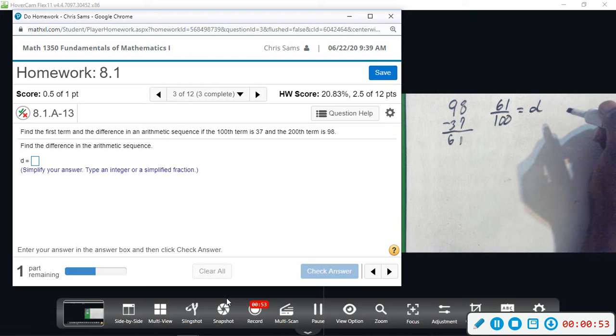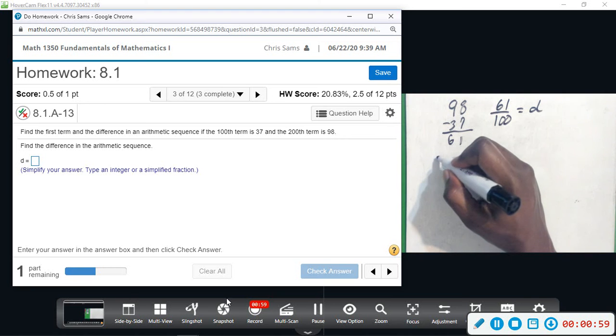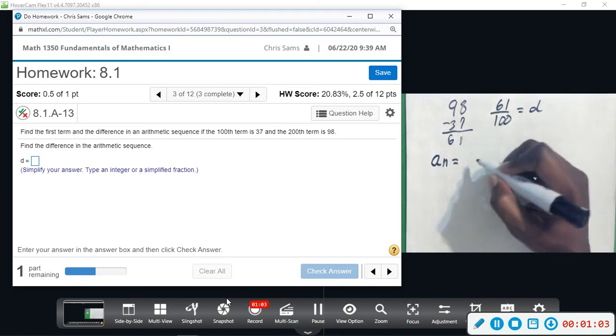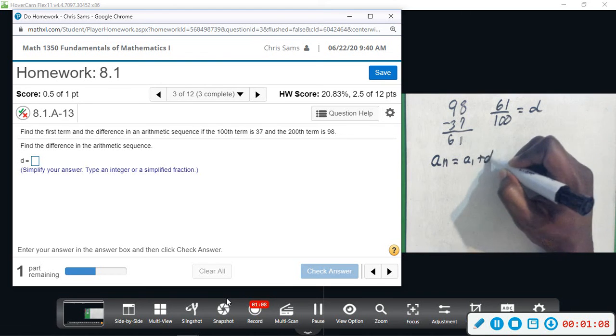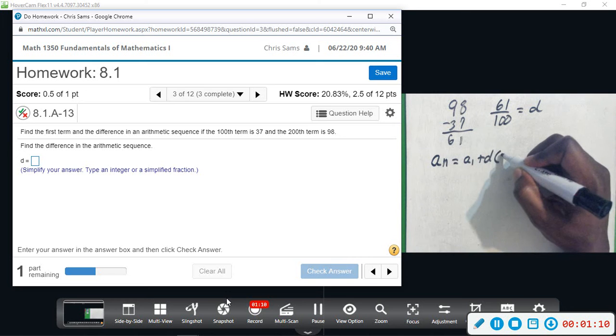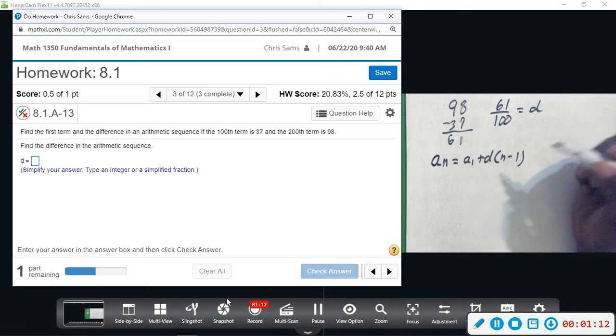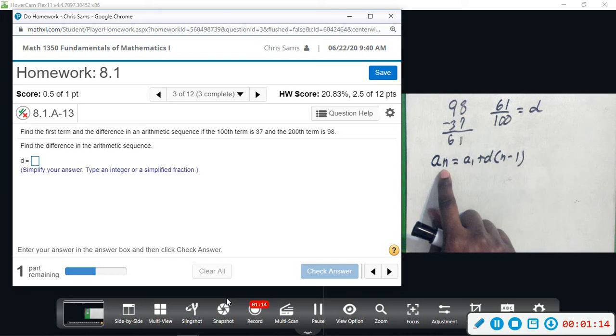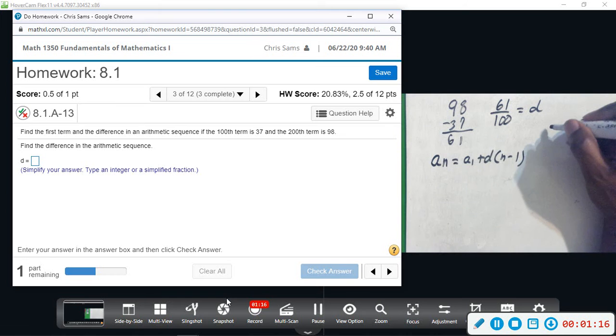Now the formula for an arithmetic sequence is a_n equals a_1 plus the difference times (n minus 1). So n, I'm going to let it be the 100th term.